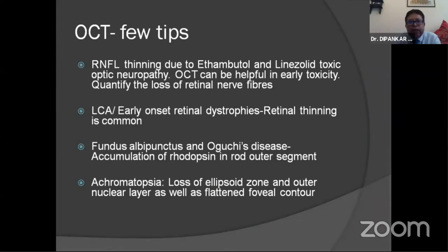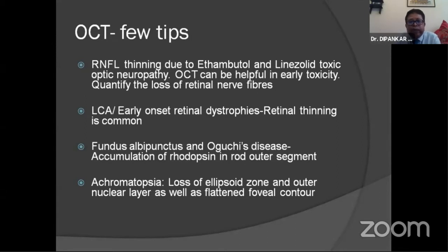A few tips about OCT: retinal nerve fiber layer thinning in ethambutol or linezolid-like antibiotic toxic optic neuropathy can be helpful in detecting early toxicity and quantifying the loss of retinal nerve fiber. In Leber congenital amaurosis or early-onset retinal dystrophy, retinal thinning can be seen. In fundus albipunctatus and congenital stationary night blindness, accumulation of rhodopsin in the rod outer segment can be an important finding. In achromatopsia, the IS/OS junction, outer nuclear layer, and flattened foveal contour can be important tips.